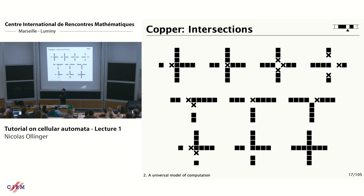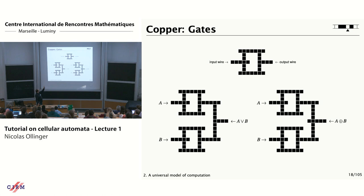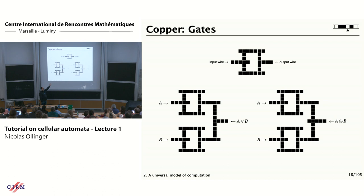Let's do electronics. First, we construct a diode — that little gadget on the top. Why is it a diode? If you put a signal in the input wire, at the first intersection it will go up and down and to the right, then turn, turn again, the two signals will meet in a synchronized way, and you will have a signal in the output. If you put a signal from the output wire, it will be almost the same, but when it arrives at the intersection with four branches, the signal will disappear. With a diode and some more collision, you can do an OR gate.